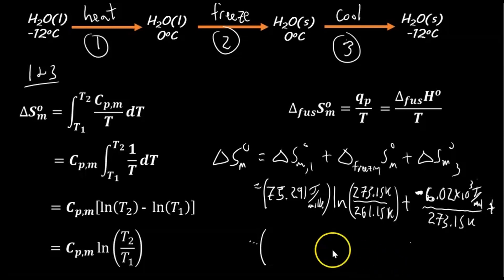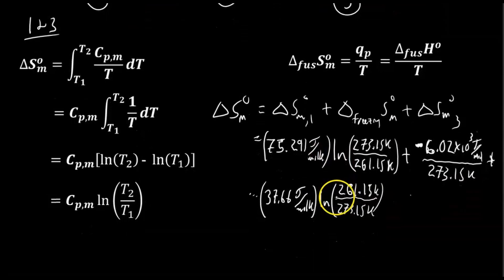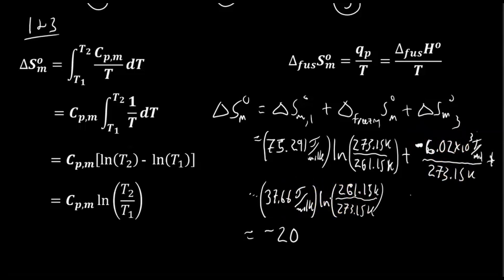For step three, the heat capacity of solid ice from a data table is 37.66 J/(mol·K), and we use ln(261.15 K / 273.15 K). Plugging all three terms into a calculator — step one plus the negative freezing term plus step three — you should get a total change in molar entropy for the system of −20.35 J/(mol·K).